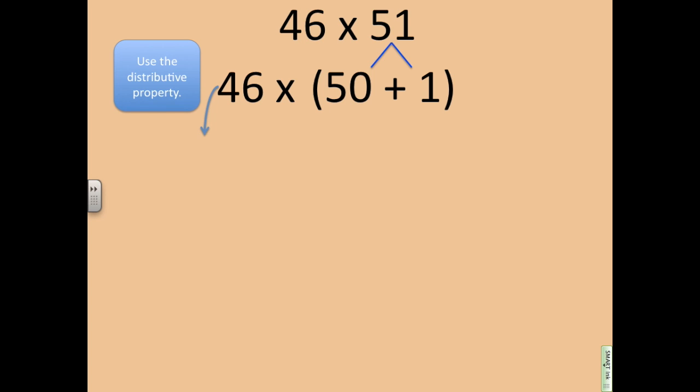Now I must use the distributive property to solve this problem. We have 46 times, which is our multiplier, 50 plus 1. So I'm going to distribute the 46 to the 50 and then the 46 to the 1. I'll rewrite it, 46 times 50 plus, because I have a plus right here between my 50 groups and my 1 group, plus 46 times 1.